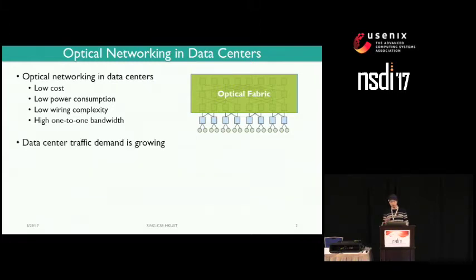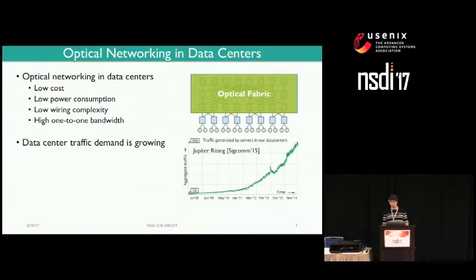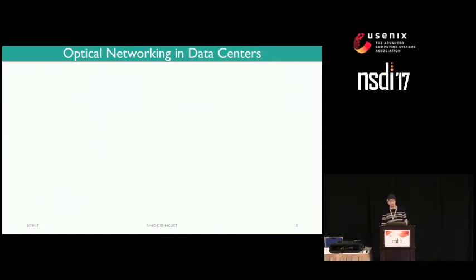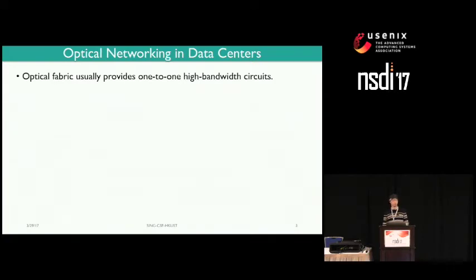In the meantime, the data center traffic demand is also growing rapidly. As reported by Google, there has been 50 times growth in data center traffic demand in the past six years. So the question for how to design an optical data center fabric is: how do we design a fabric that enables high bisection bandwidth? At first glance, this challenge may seem trivial as optical networks are known to provide high-bandwidth one-to-one links.